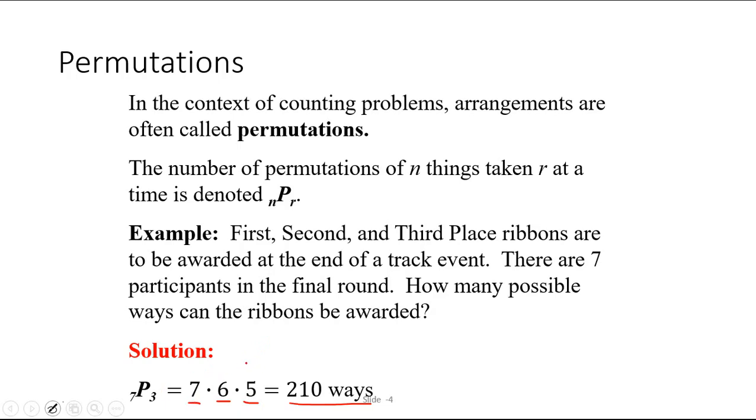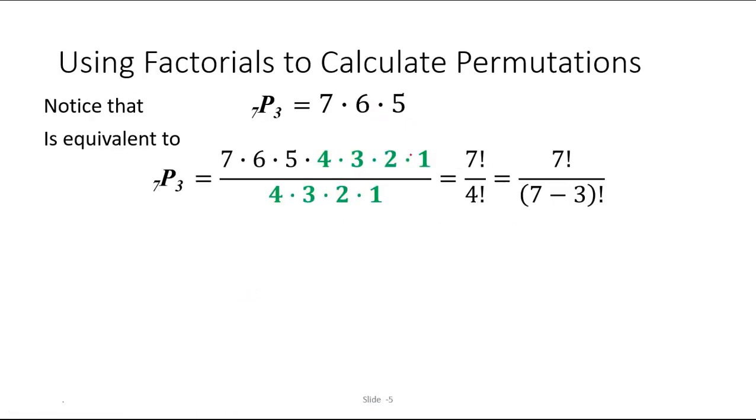To calculate a permutation, one way is to start with the number of objects, which in this case is seven people, and to multiply three factors together, reducing by one each time, seven times six times five. You can also rewrite this expression seven times six times five in a special way, but if you took seven factorial, which is seven times six times five times four times three times two times one, and divided it out by four factorial, all of the factors less than five would cancel out, and you'd be left with just the seven times six times five. We observe that because we'd like to have a formula that involves the seven and the three in the 7P3 permutation notation.